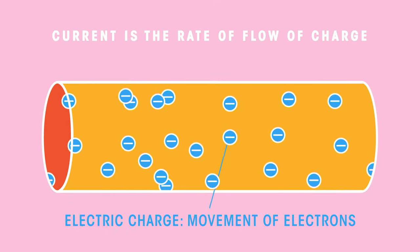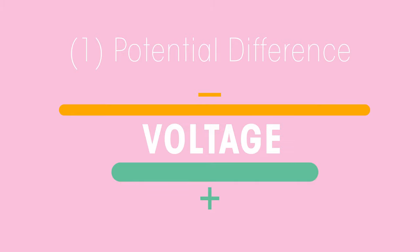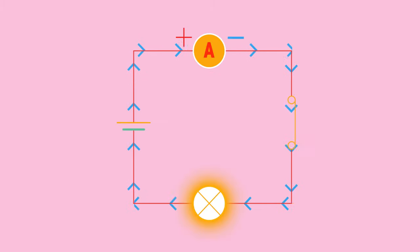So why does charge flow and therefore current? For electrons to flow we need two things: one, a source of potential difference which is also known as voltage—this provides the pressure that makes the current flow—and two, a complete circuit.